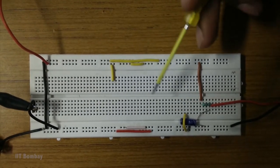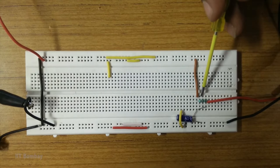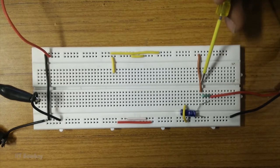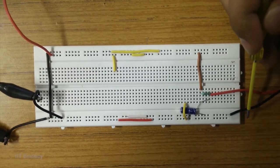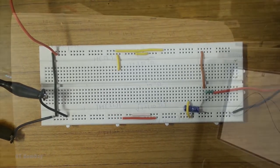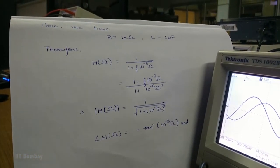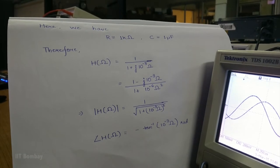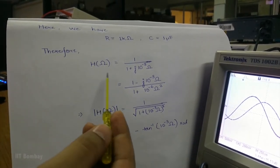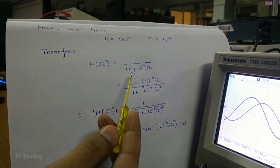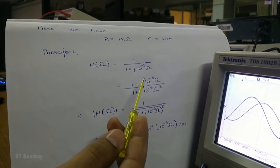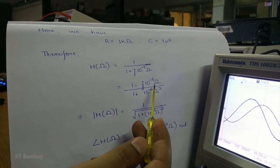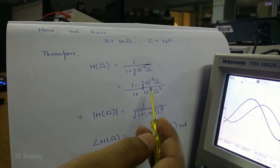Here is our apparatus. We have a simple RC circuit with a resistor of 1 kilo-ohm and a capacitor of 1 micro-farad. From here we give the input to the RC circuit, and through these probes we fetch the output on the digital oscilloscope. With R = 1 kΩ and C = 1 µF, the transfer function can be written as 1 upon (1 + j·10⁻³·Omega), or further written as (1 − j·10⁻³·Omega) all upon (1 + (10⁻³·Omega)²).